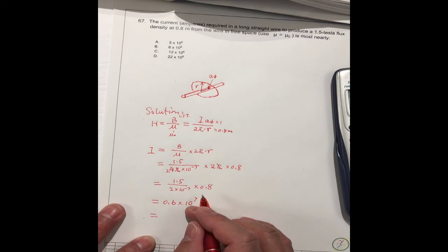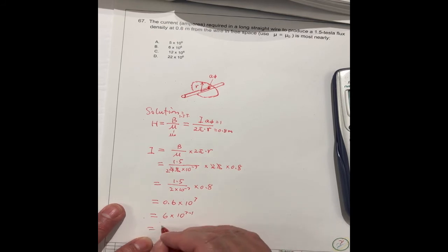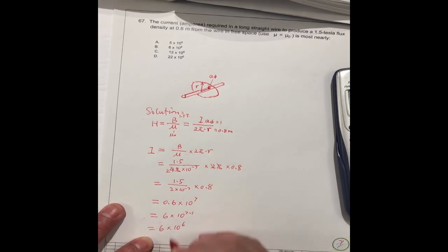And you can simplify, move this one, 1 to here. 7 minus 1, it should be 6 times 10^6.